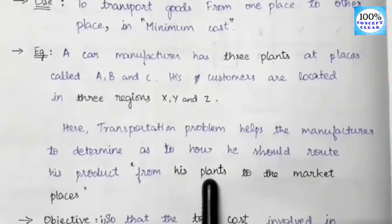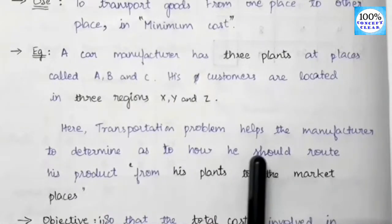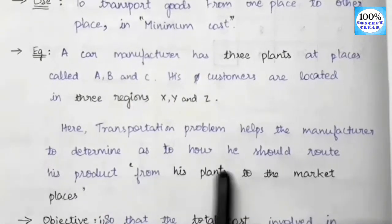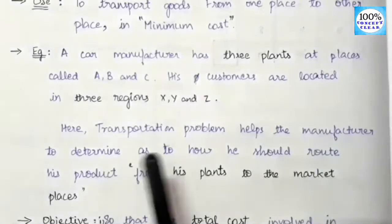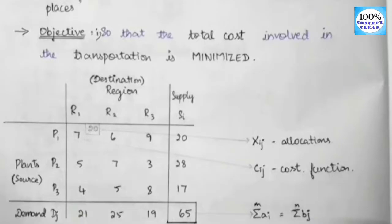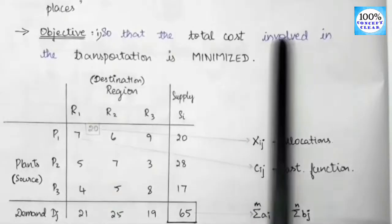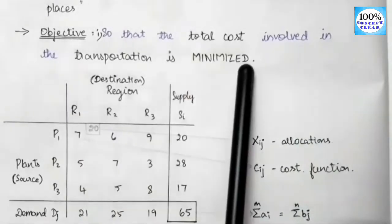So in this case, we use the transportation problem. If you want to minimize cost for any company, you will have minimum cost and then you will have maximum profit. The objective is so that the total cost involved in the transportation is minimized.